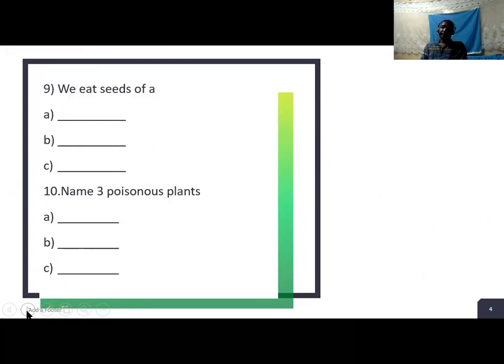Question 10. Name three poisonous plants. We also plant poisonous plants - plants that are harmful to human beings.